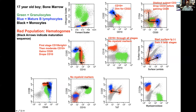Hematogones, as immature B cells, start negative for surface immunoglobulin. As they mature, they will either become kappa positive — a nice streaming of these cells — or gain surface lambda, to eventually become mature B cells. For CD45, hematogones start CD45 dim positive, then become moderate positive, and eventually bright as they become mature B cells.